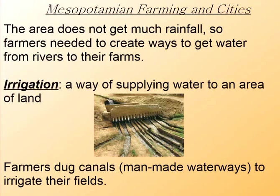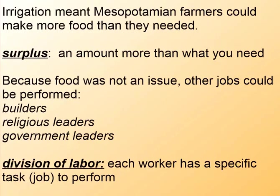The area doesn't get a lot of rainfall, even though it gets a lot of water. So farmers needed to create ways to get water from those rivers to their farms — this is the start of irrigation. It's a way of supplying water to an area of land. They would dig man-made canals from the rivers and bring those canals to their farms, splitting them up. Irrigation meant Mesopotamian farmers could produce a surplus — an amount more than what they needed.